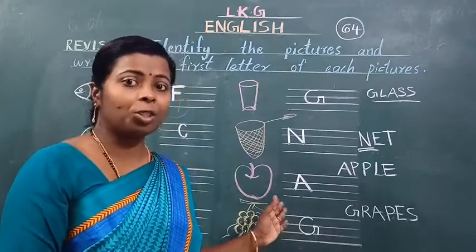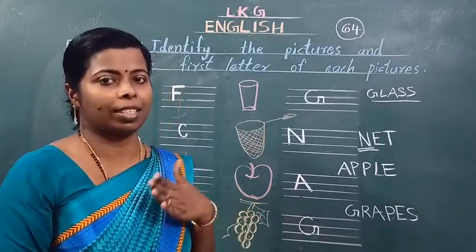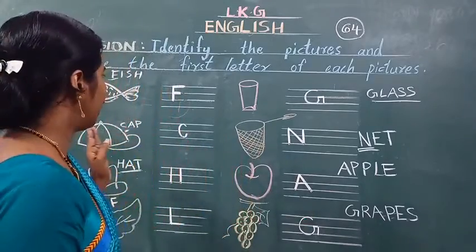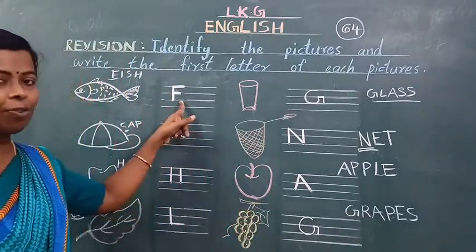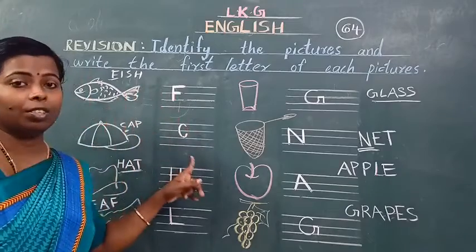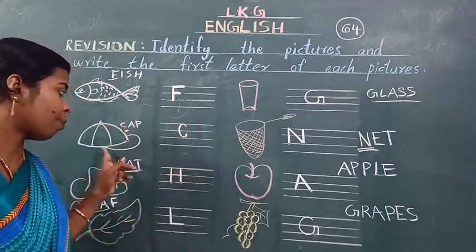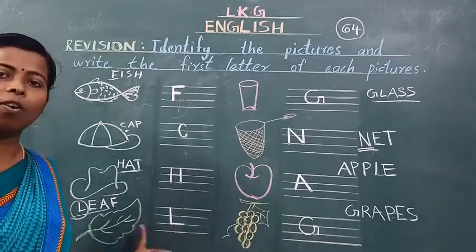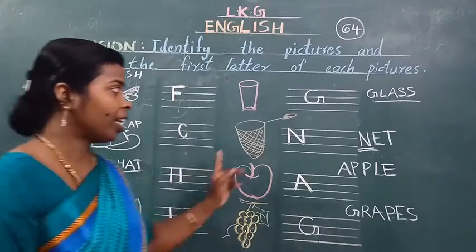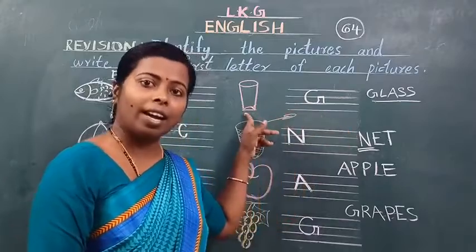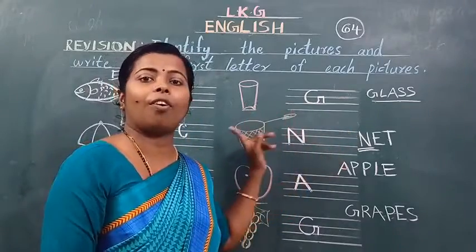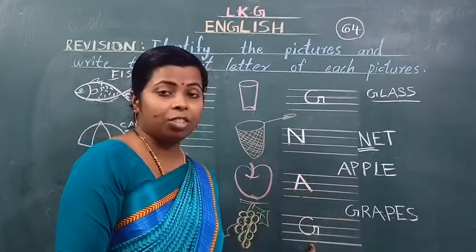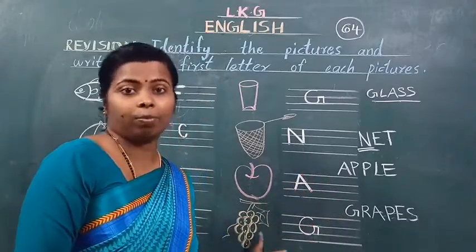Now we will read together. Aapko bhi miss ke saath read karna hai. Abhi ham ek bar read karayenge. F for fish. C for cap. H for hat. L for leaf. G for glass. N for net. A for apple. G for grapes.